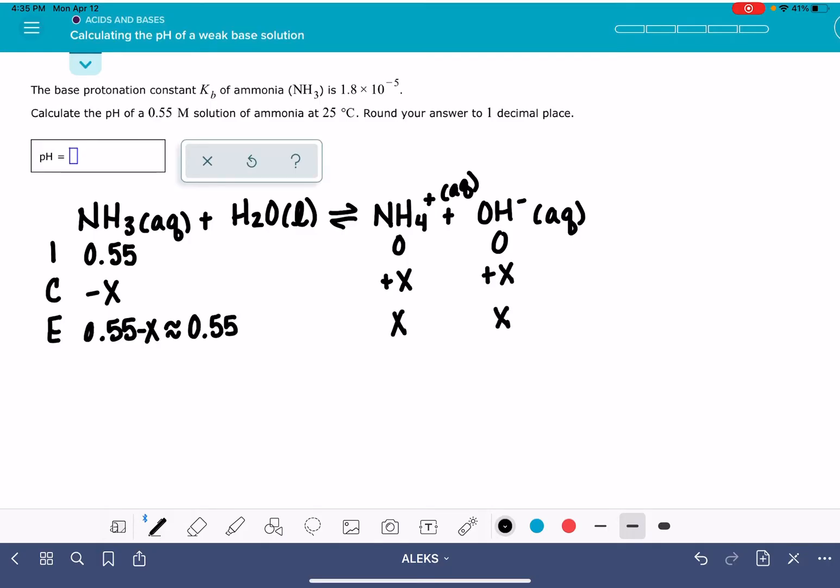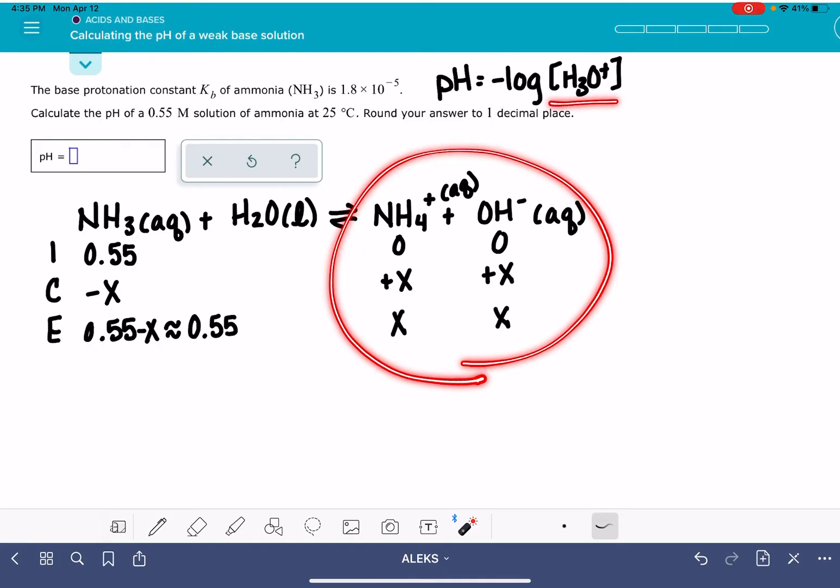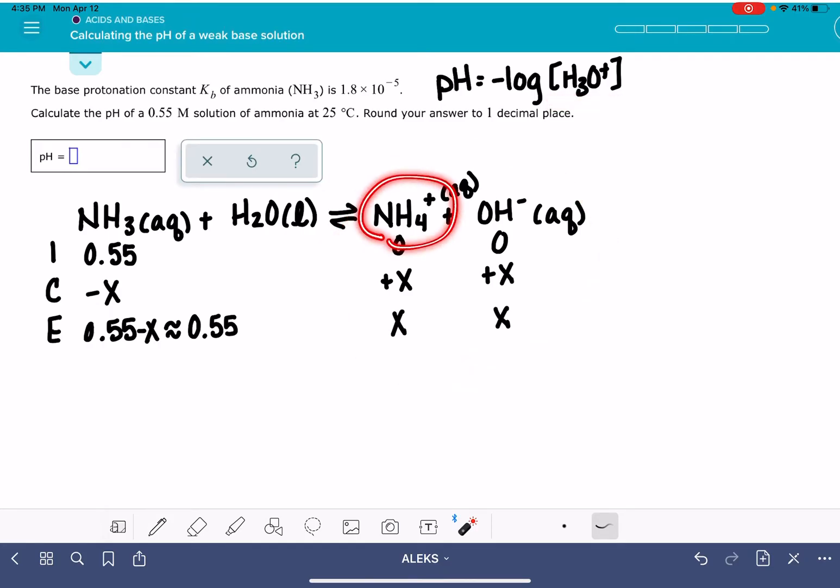So there's the ICE table that we need to use. We're going to be calculating the pH, which we would normally calculate by taking the negative log of H3O+. However, our ICE table doesn't give us any H3O+ values. It gives us NH4+ and OH-, but it doesn't give us any H3O+. So we're not going to be able to use this equation to calculate pH.